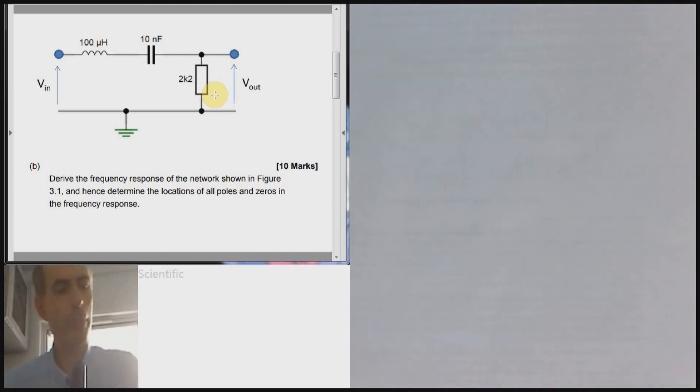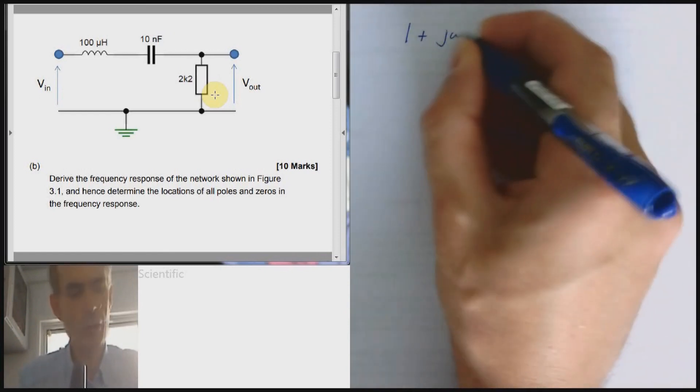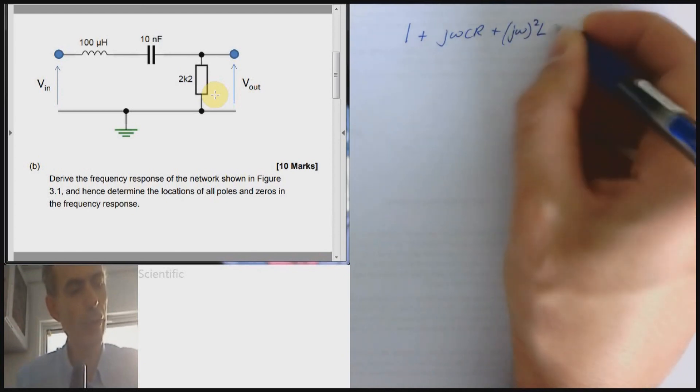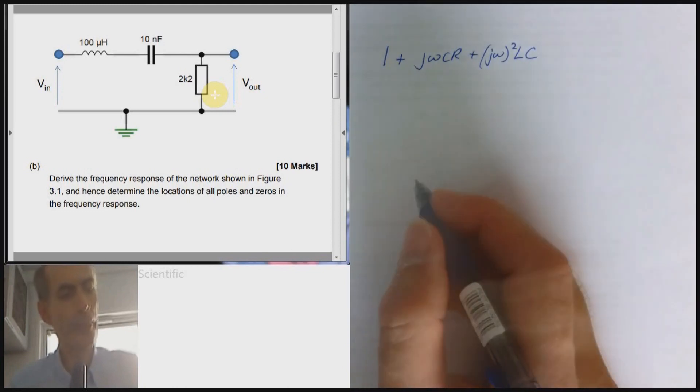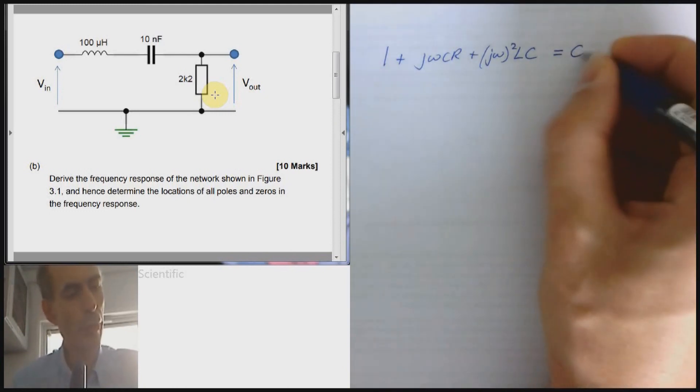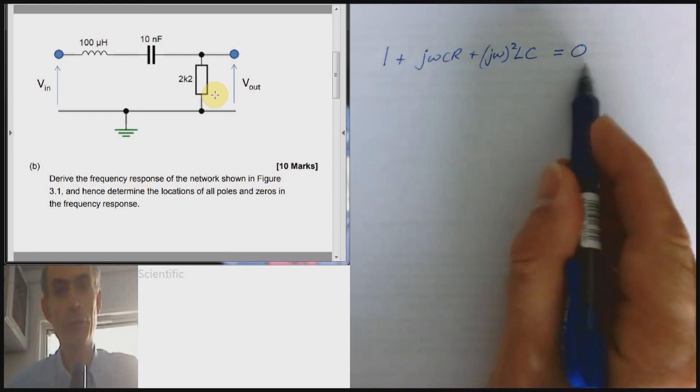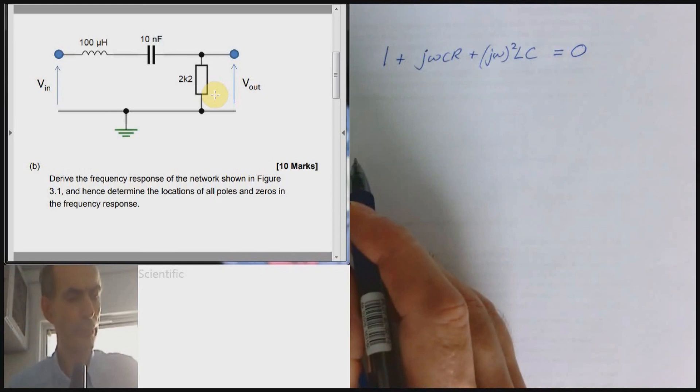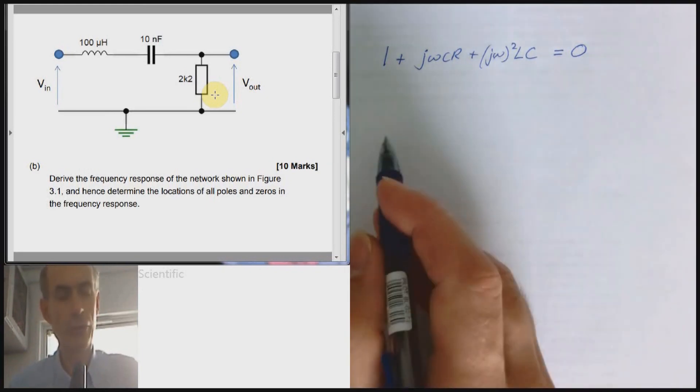And that is to use the rather easier to remember fact that the pole frequencies are minus 1 times the roots of the polynomial. Now, what the polynomial that we had was 1 plus jωCR plus jω squared LC. And if we want to find the roots of that expression, we put that equal to 0 and work out what values of jω make this expression true. Those are the roots of this equation. And as I said, the poles are minus 1 times those roots. So,